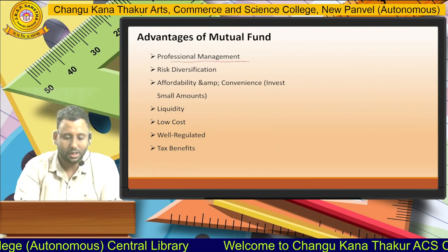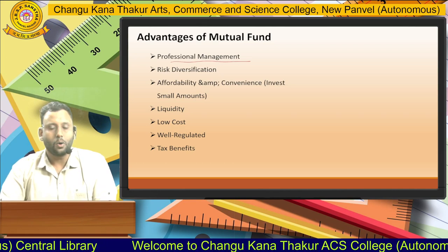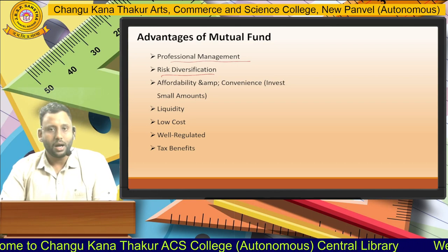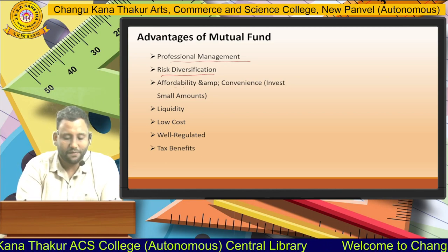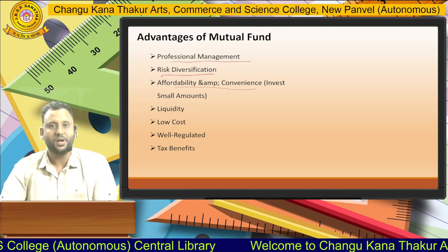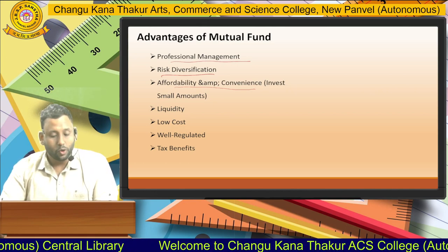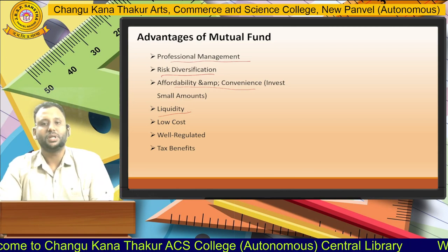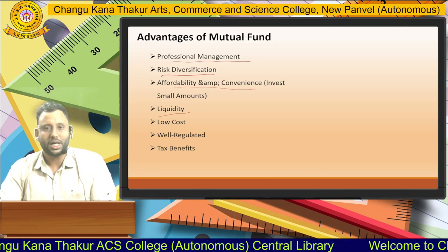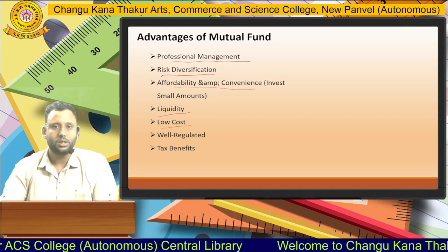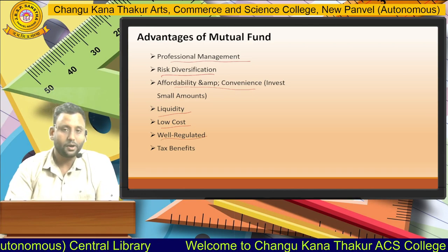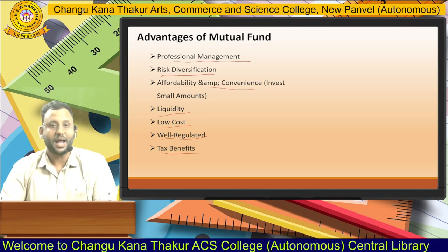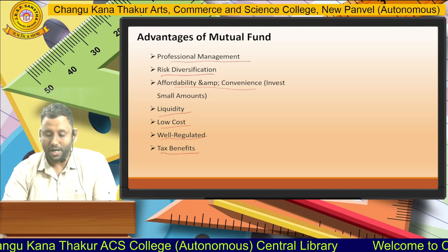Advantages of mutual fund: first is professional management — mutual funds are owned and controlled by professionals. Second is risk diversification — risk is diversified by investing in various shares and debentures. Third is affordability and convenience — it is very affordable and convenient for investors who invest small amounts; mutual funds can start with as little as 500 rupees. Fourth is liquidity — you can easily convert your mutual fund into cash. Fifth is very low cost — you pay very low costs on entry and exit. Sixth, it is well-regulated by SEBI. Seventh, tax benefits — some schemes provide tax benefits under applicable provisions.